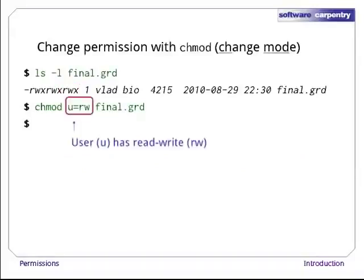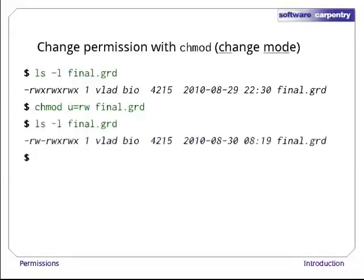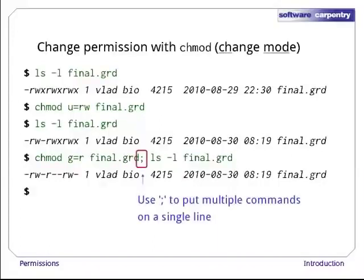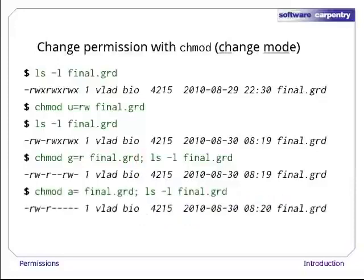A quick ls -l shows us that it worked. Let's run chmod again to give the group read-only permission and then display the results. Notice that we've put two commands on a single line — we can do this as long as we separate them with a semicolon. Finally, let's give all — everyone on the system who isn't the file's owner or in its group — no permissions at all. That's what a= means. The a signals that we're changing permissions for all, and since there's nothing on the right of the equals, all's new permissions are empty.